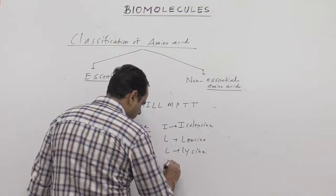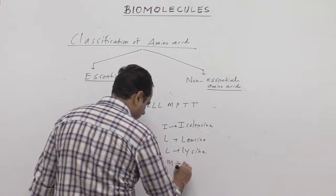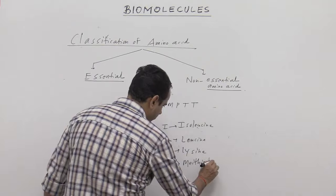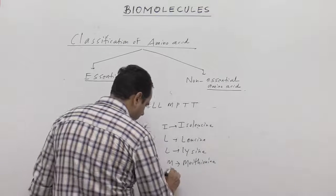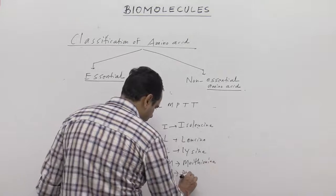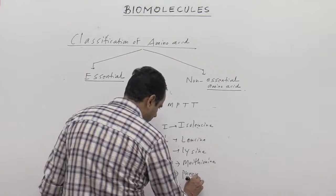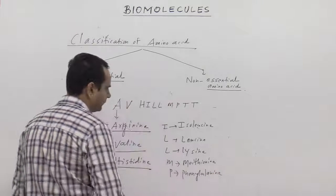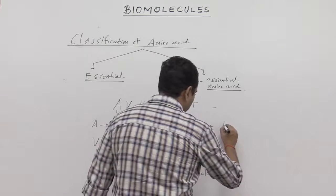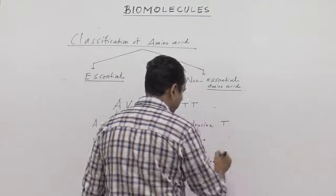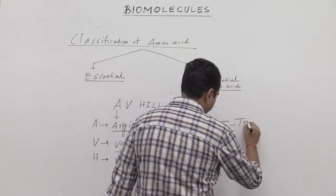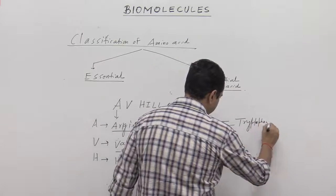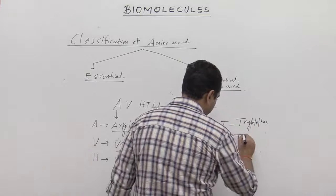M is methionine. P is phenylalanine. T is tryptophan. And this second T is threonine.